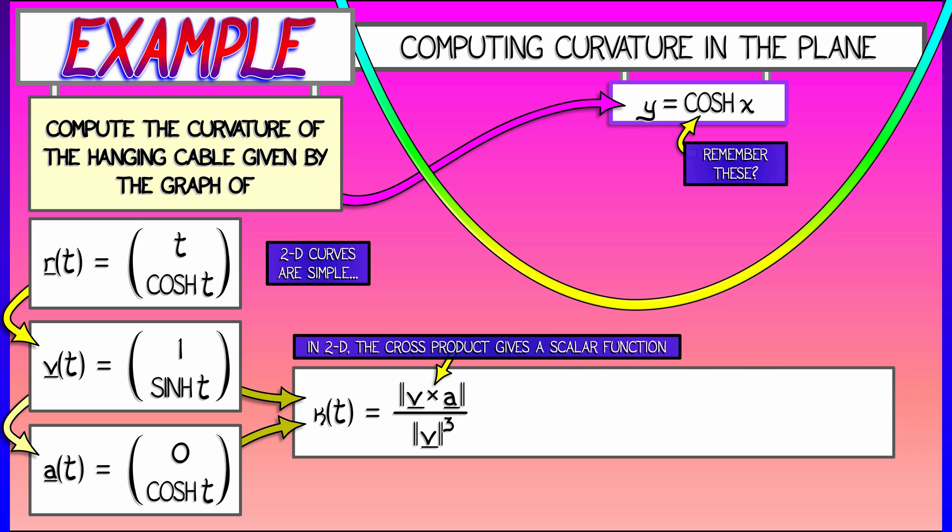Then dividing by the speed cubed. This is going to give me, very easily, a cosh(t) in the numerator. And then in the denominator, what I need to do is compute the length of v. That's going to be square root of 1 squared plus sinh squared, and then cube that.